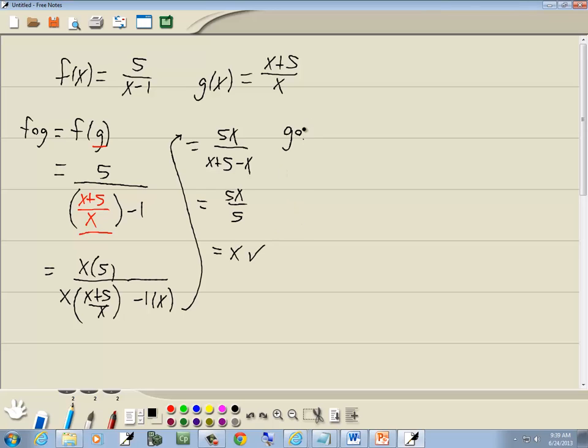Well, we also need to find the composition going the other way. So find the composition of g and f, or g of f. Now, we're going to take our g of x, and wherever we have an x, we'll put in parentheses. I'll make them a little bit larger, because I know what I need to put in there.